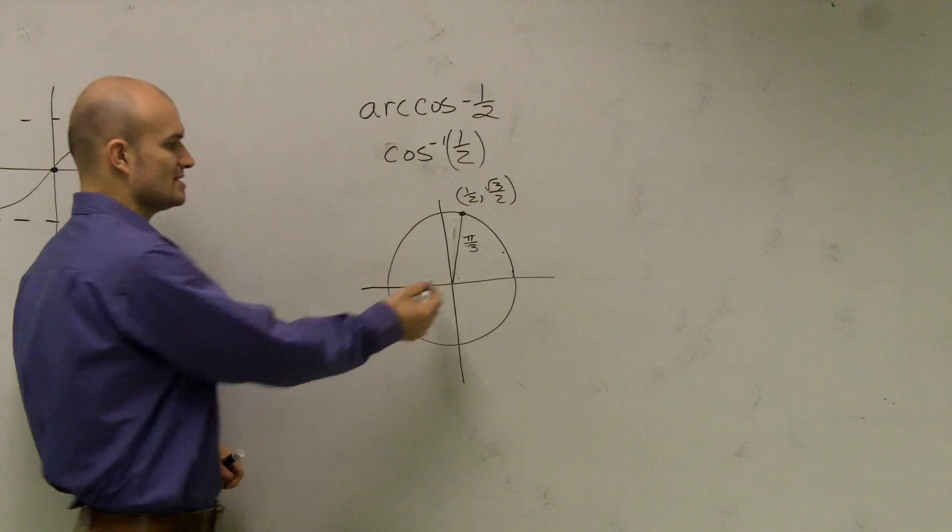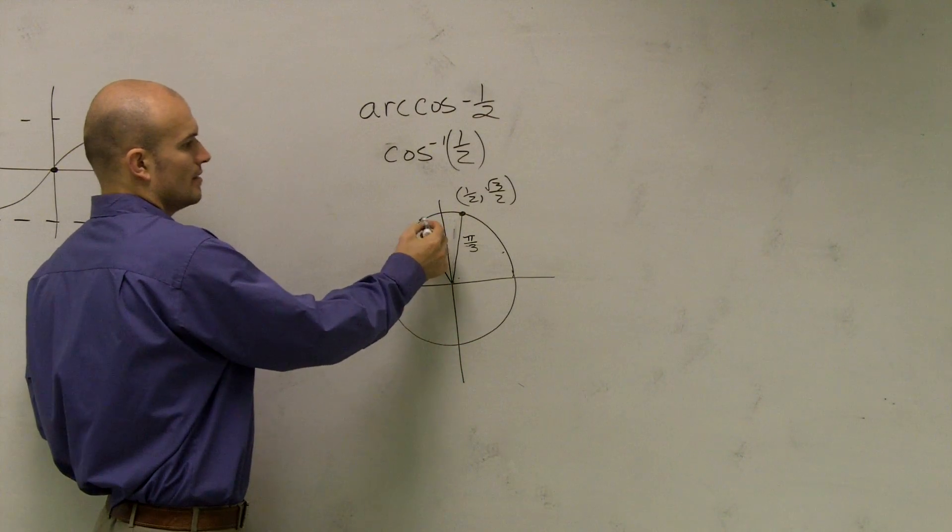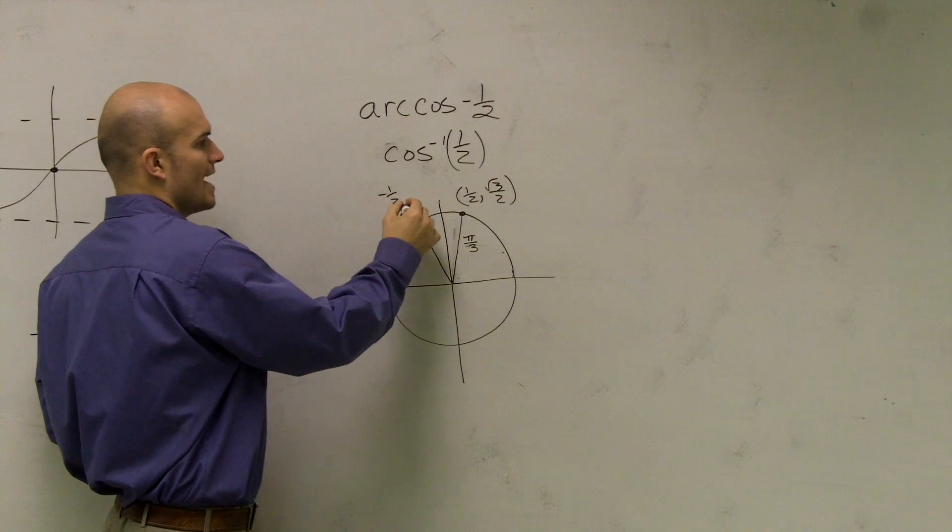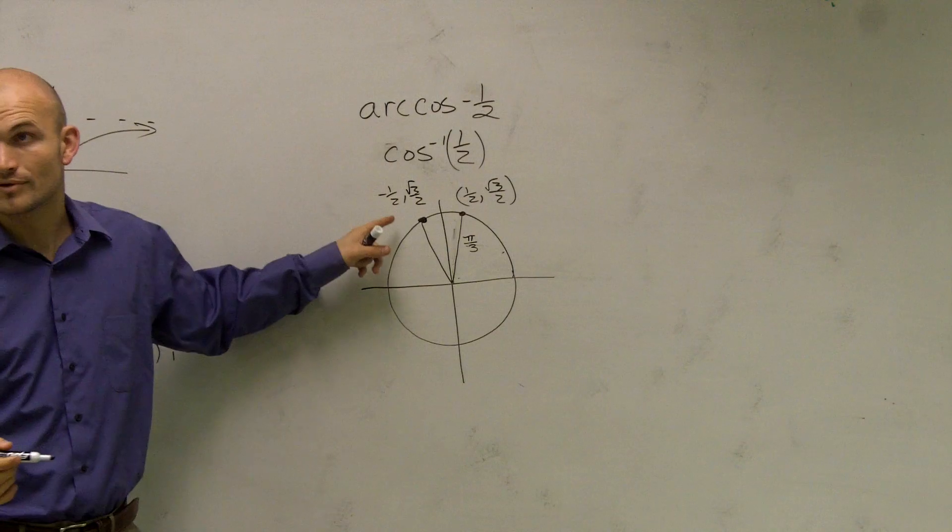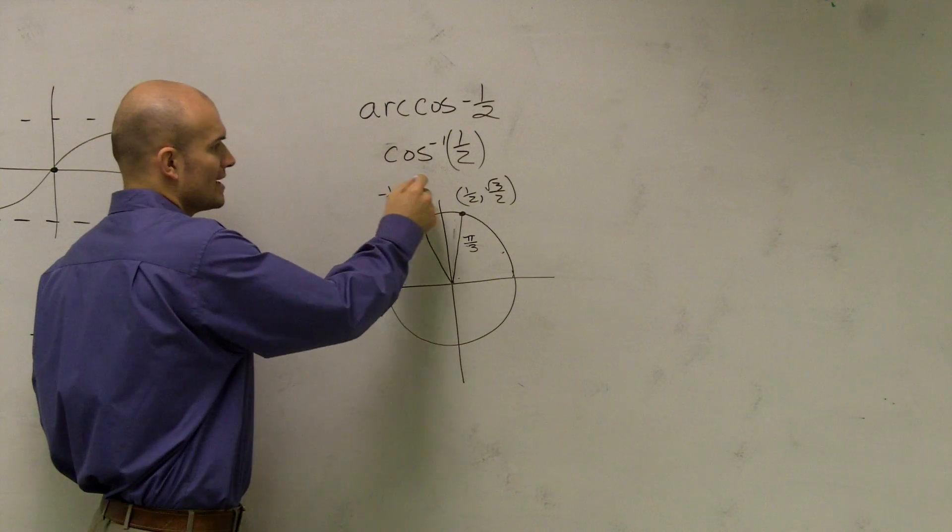Then, the only other time, you can say over here, I actually have a negative 1 half radical 3 over 2. So this point is not going to count, right? So we're not going to worry about this point.